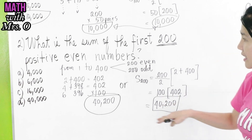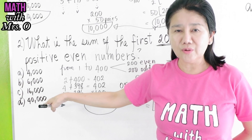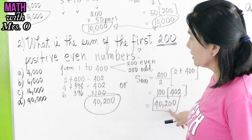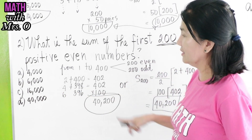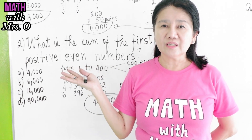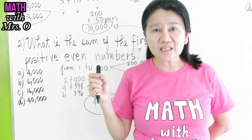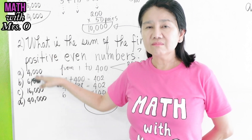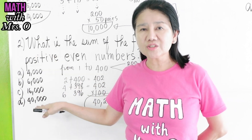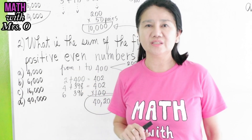Is the answer A, B, C, or D? No — because the correct answer is 40,200. So in that case, if in the exam you were given 'write E if the answer is not among the choices,' then you write E, or you don't answer.